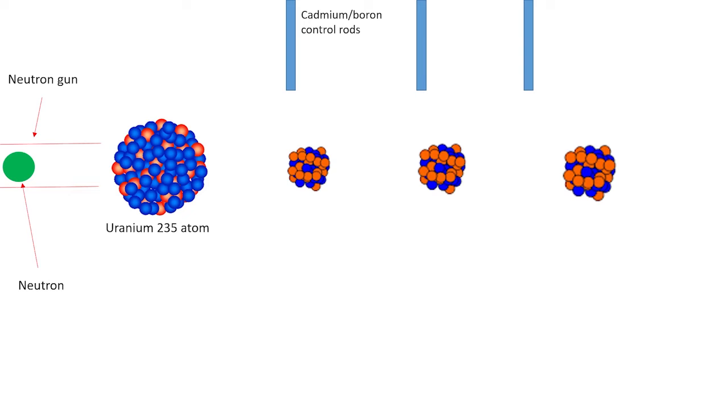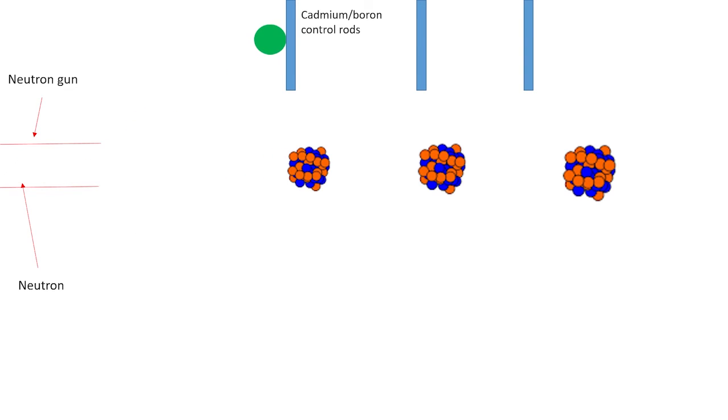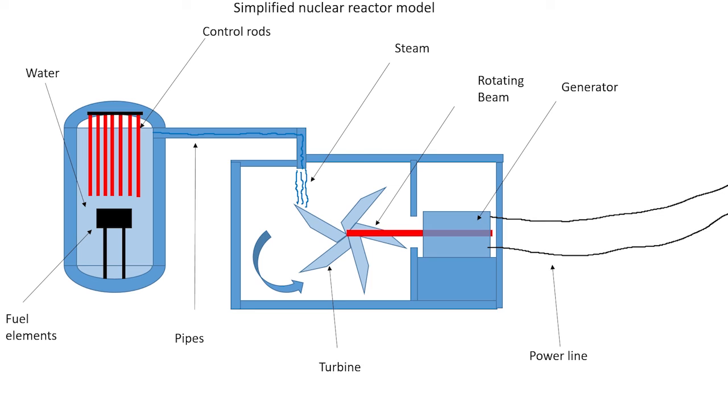To do this, boron or cadmium control rods are used to absorb some neutrons so the reaction is stable. These rods can be moved in or out of the reactor as needed. Water is also usually used in a nuclear reactor as a moderator to slow down the neutrons so they can be absorbed by the uranium atoms.